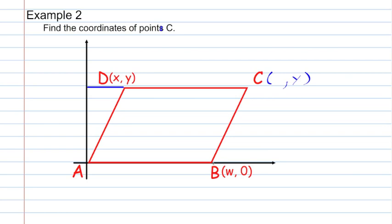That distance is going to be the same as if we made a right triangle here, and this also was a right triangle with the y-axis. To find the coordinate of point C, since this distance is x and this is the same distance x, what we have to do is add w and x to get the x-coordinate of point C. So the coordinates of point C are (w plus x, y).